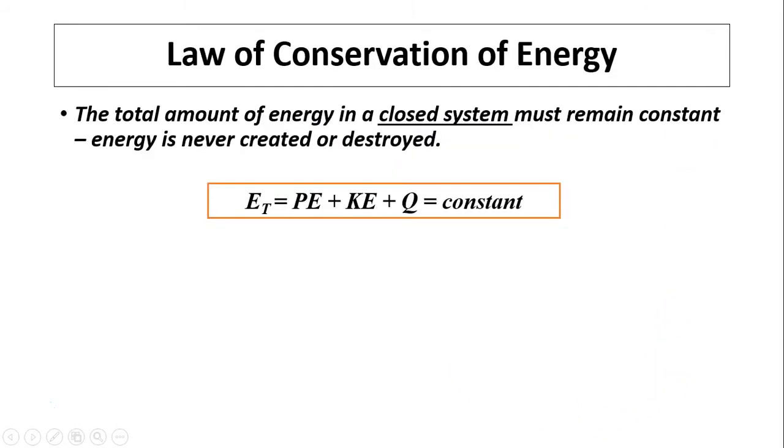The law of conservation of energy says the total amount of energy in a closed system must remain constant. That means energy can never be created or destroyed. So in a formula, it says E total equals P plus K plus Q has to be constant. This is called a closed system. That means there is no external force acting on the system.